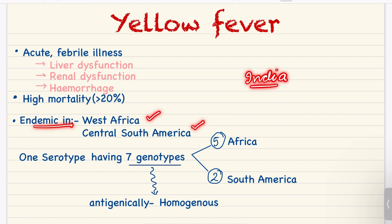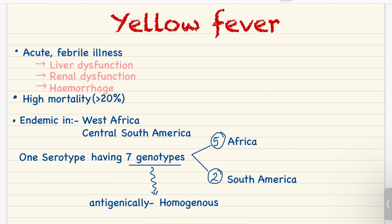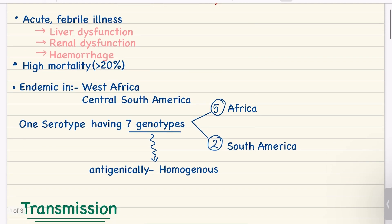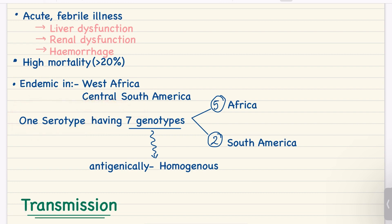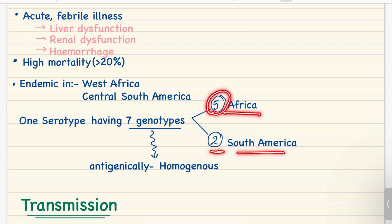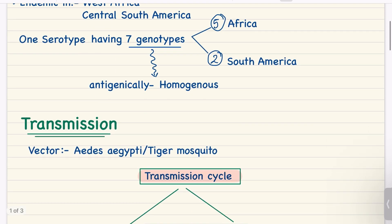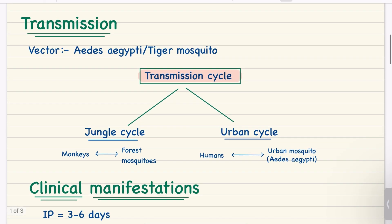India is free from yellow fever — yellow fever is not found in India. In yellow fever we have one serotype which further has seven genotypes. All seven genotypes are antigenically homogeneous. Regarding geographical distribution, five of these genotypes are found in Africa and two in South America.